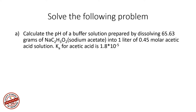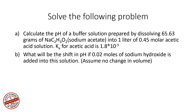Here is a problem. Calculate the pH of a buffer solution prepared by dissolving 65.63 grams of sodium acetate into 1 liter of 0.45 molar acetic acid solution. The Ka for acetic acid is 1.8 × 10⁻⁵. The second part of the problem asks: what will be the shift in pH if 0.02 moles of sodium hydroxide is added into the solution? Assume no volume change when reactants are added to this mixture.